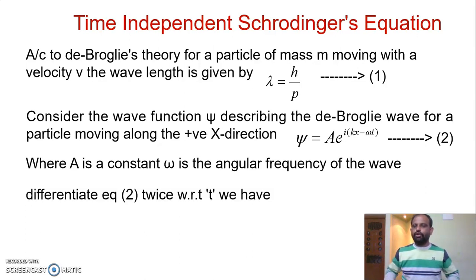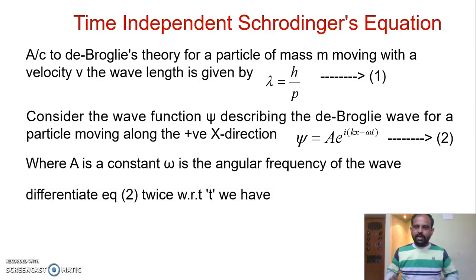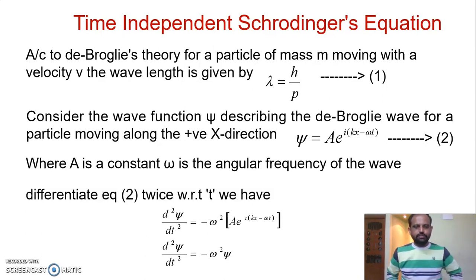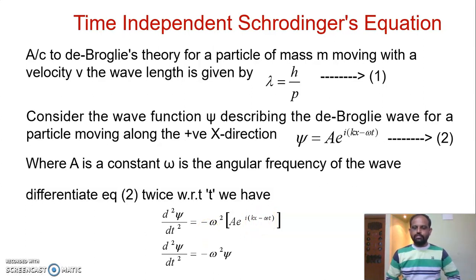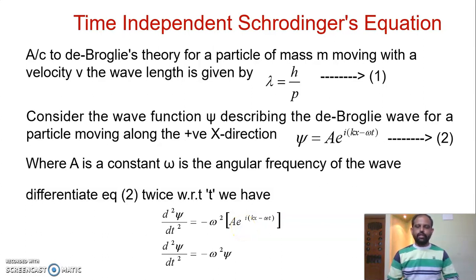Differentiating again, we get A times e to the power of i(kx − ωt) times (−iω) times (−iω), which gives i² ω² times psi. Since i² equals −1, the second derivative gives d²ψ/dt² equal to −ω² times A times e to the power of i(kx − ωt), and since the bracketed term equals psi from equation two, we get d²ψ/dt² equal to −ω²ψ. We can call this equation number three.